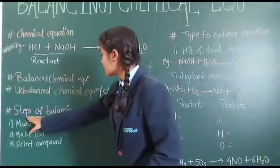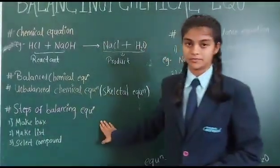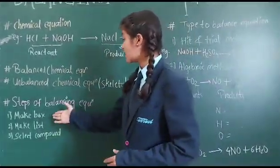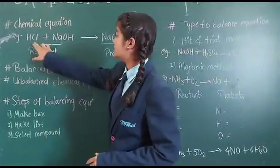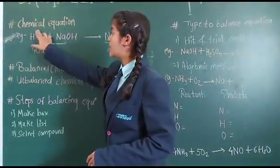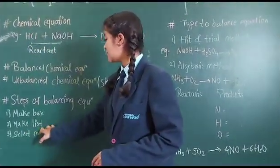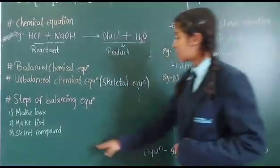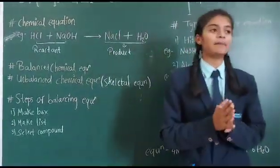So let's see what are the steps for balancing equation. There are commonly three steps to balance equation. First is make a box, means if it is an element, make a box here and make a list of all the elements like this. And third is select compound which contains maximum atoms.